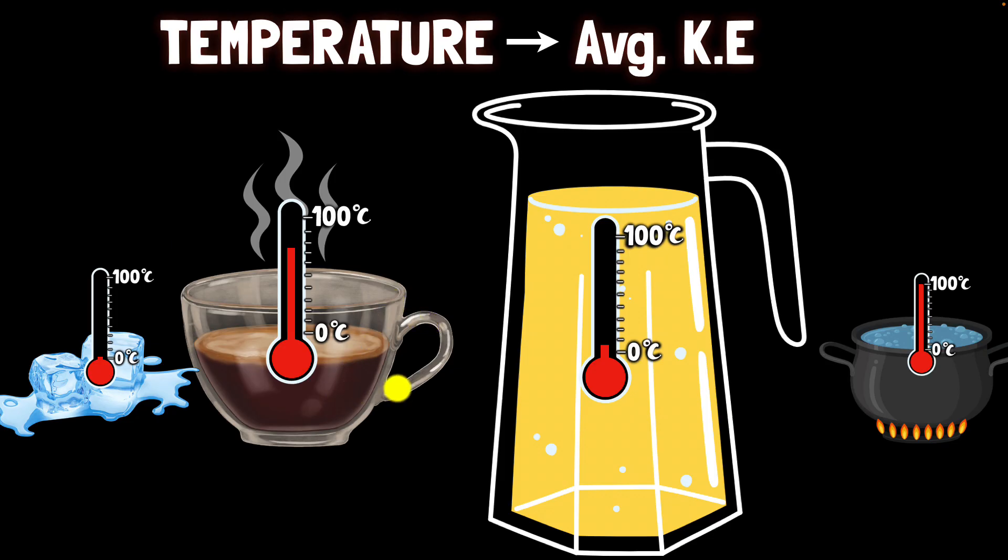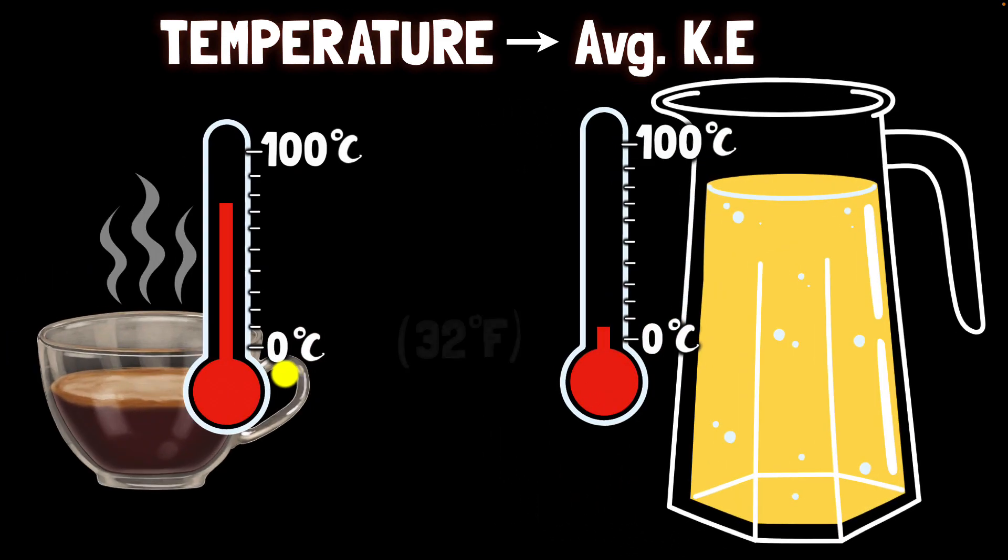Now Fahrenheit, the person who invented the Fahrenheit scale, used very different reference points for his zero and hundred which are not very reproducible. So today we define Fahrenheit this way we assign zero degrees Celsius as 32 degrees Fahrenheit and 100 degrees Celsius as 212 degrees Fahrenheit. So in the Fahrenheit scale there are 180 divisions between the freezing point and the boiling point. And there you have it.